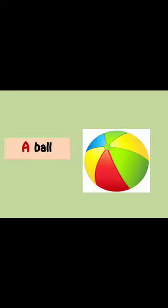Let's see some words. This is a ball picture. See, this is a colourful ball. The beginning letter of ball is B. B is a consonant, so we use A. We say: a ball.